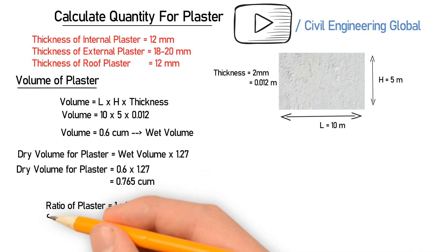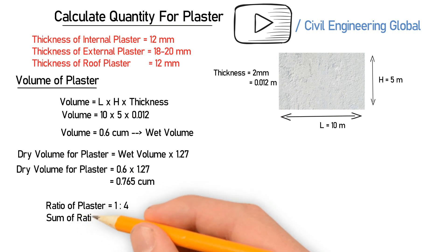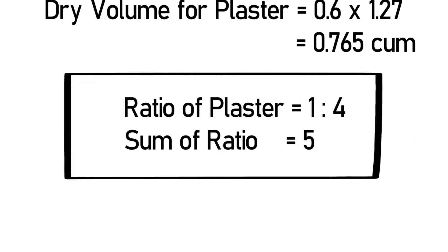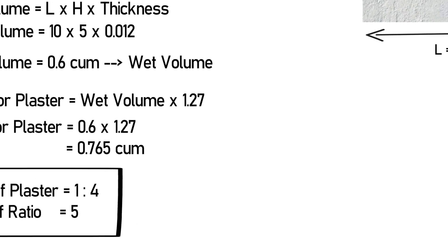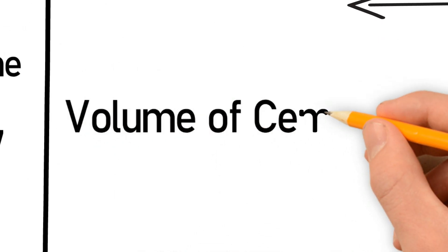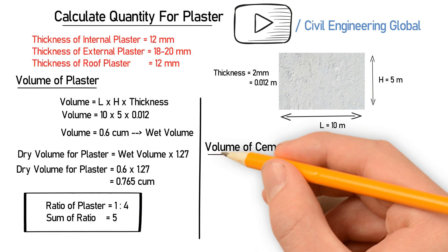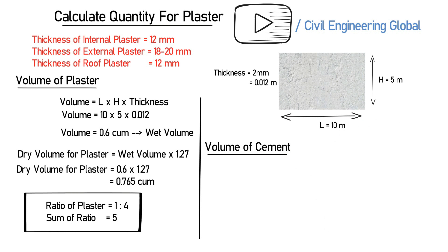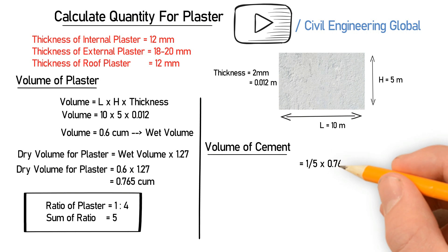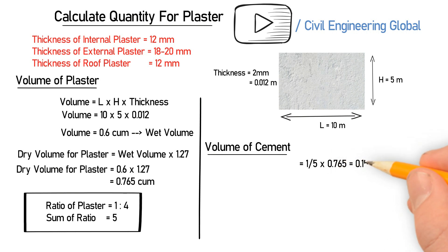In this example we will take a ratio of 1:4, where 1 is cement and 4 is sand. The sum of ratio is 5. To calculate the volume of cement, the formula is: (1 / total ratio) × dry volume = (1 / 5) × 0.765, which gives 0.153 cubic meter.